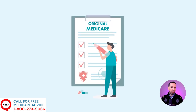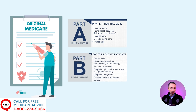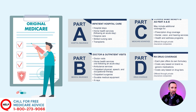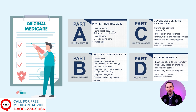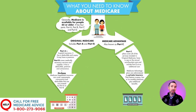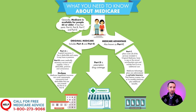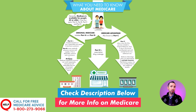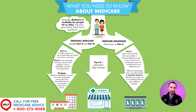The original Medicare program is made up of three main parts: Part A, Part B, and Part D. There are four parts total, including Part C, which is an alternative to the original parts. How much you will pay for each of these parts will depend on your individual or household income. In this video, I'll go through all the basics you need to know about the four parts, and I'll include helpful links in the description below.